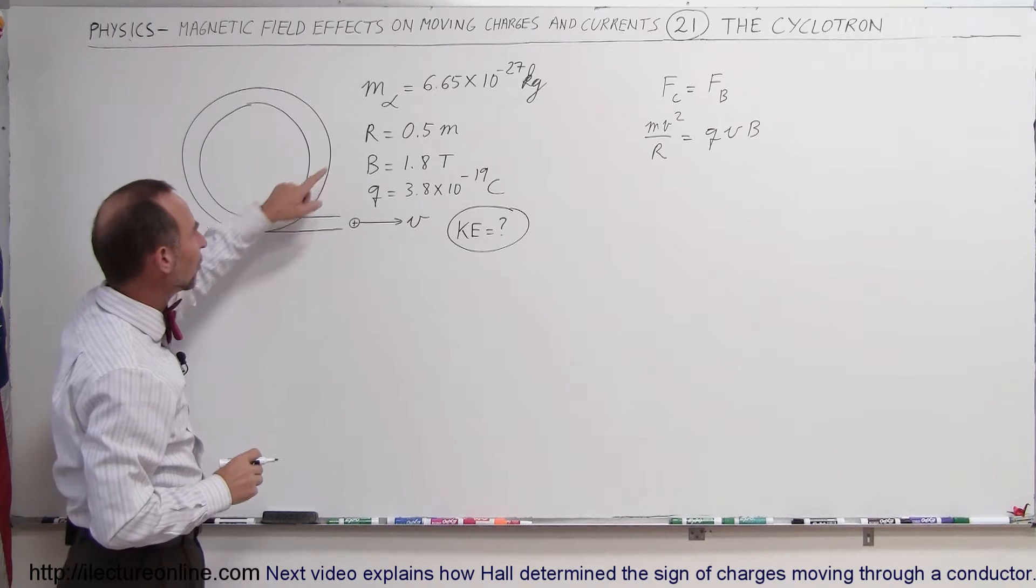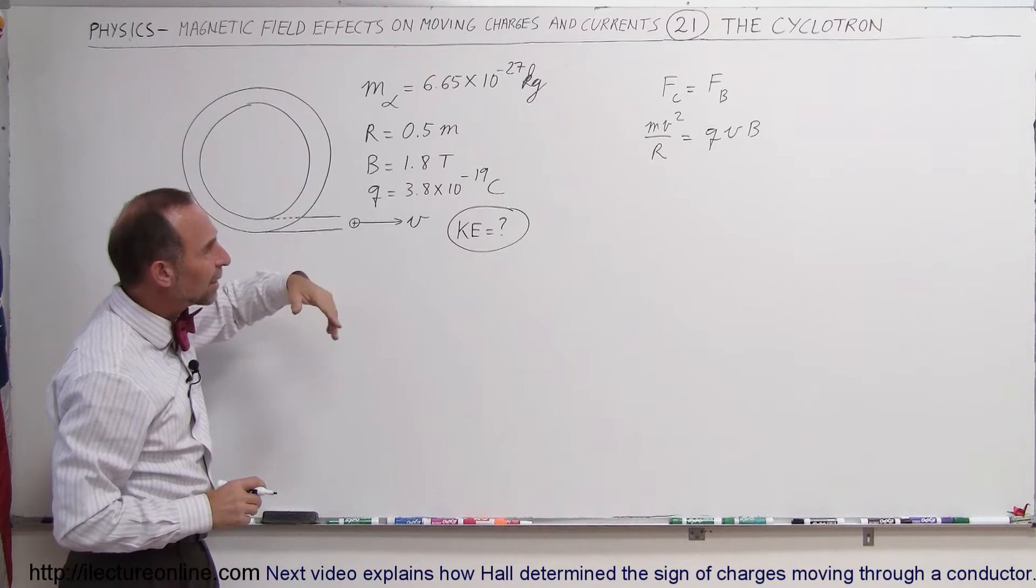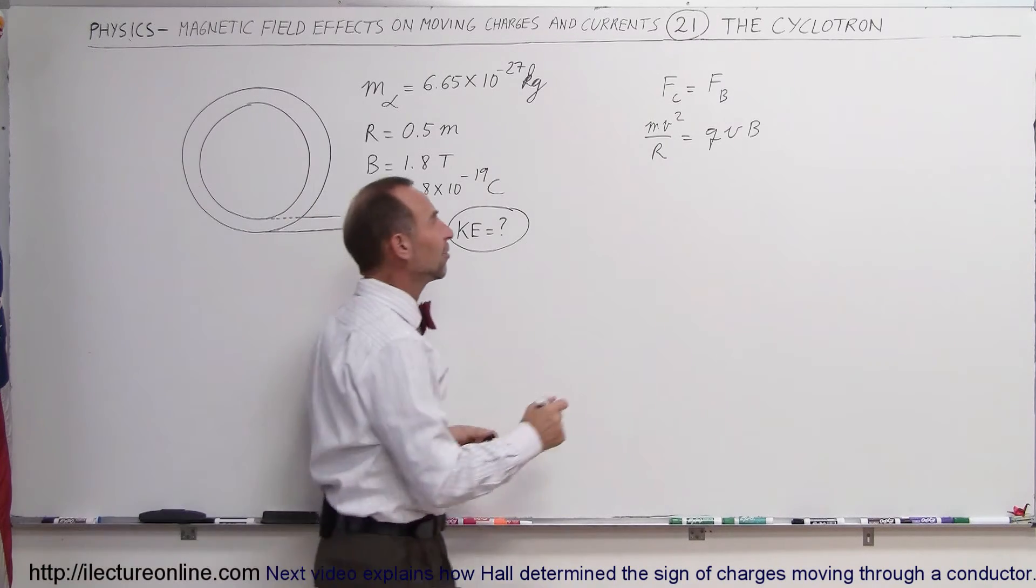We know the mass of the particles. We know the radius. We know b, the magnetic field and the charge. We simply don't know velocity. So we'll go ahead and take that equation and solve for velocity.